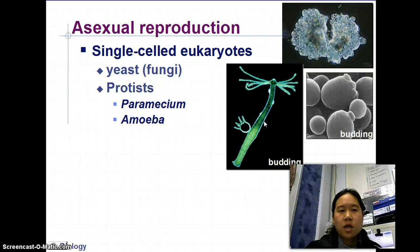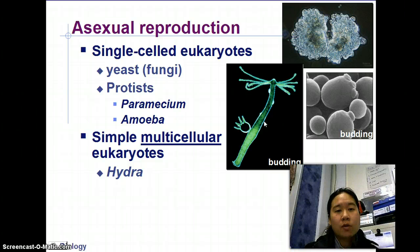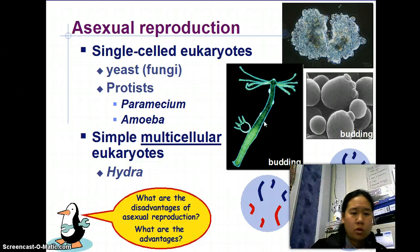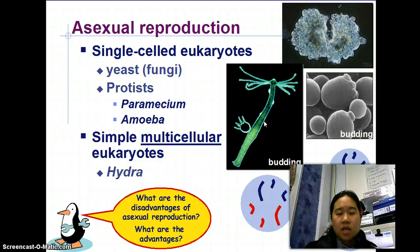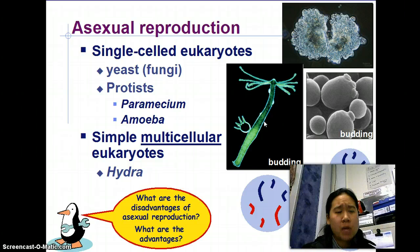Things like hydra also undergo asexual reproduction. These are examples of things that do asexual reproduction — some multicellular organisms, but not a whole lot. It tends to be more common when you're single-celled. Before we move on, what are some disadvantages and advantages of asexual reproduction? Wouldn't it be great if you could just make a copy of yourself anytime you wanted? Take a moment and think about that.